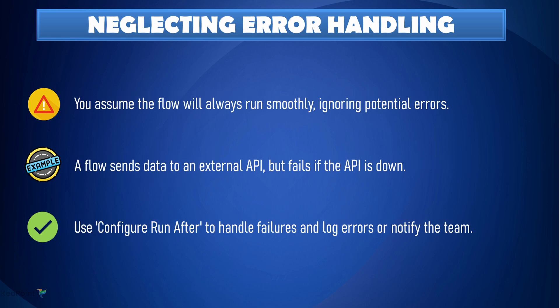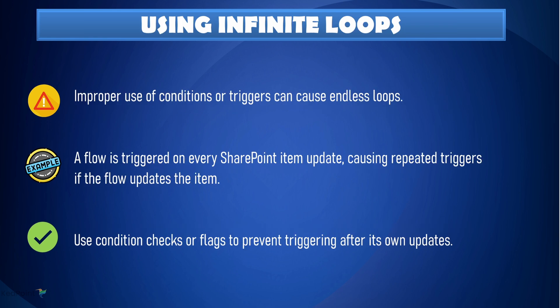Fourth: don't neglect error handling. If you assume your flow will always work perfectly, you will be in trouble when something goes wrong. For instance, if your flow sends data to an external API but that API is down, what happens? Your flow fails and no one knows. Always include error handling steps, like using 'Configure run after.' That way, when an API call fails, you can log the error or send a notification so the issue doesn't go unnoticed.